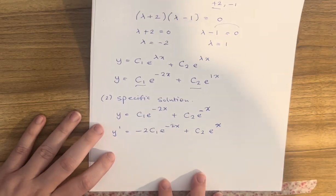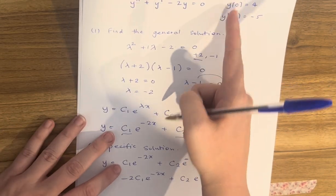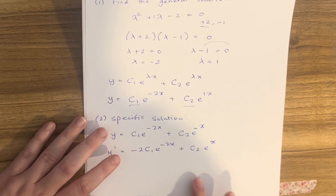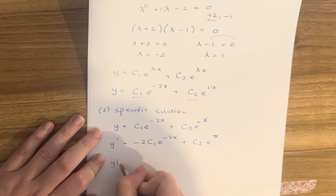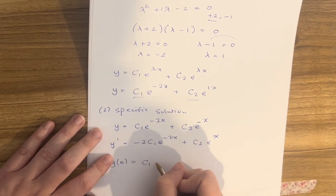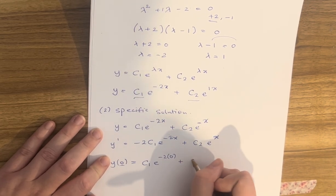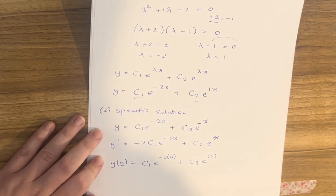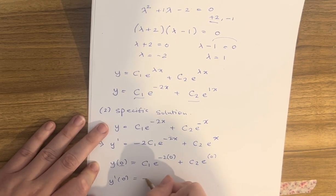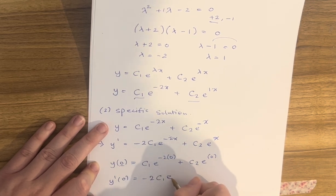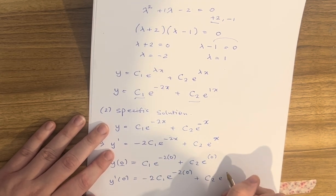Now we use the initial values. For y(0) equals 4, substituting x equals 0 gives c1·e^0 plus c2·e^0. For y dash of 0 equals minus 5, substituting x equals 0 gives minus 2c1·e^0 plus c2·e^0.